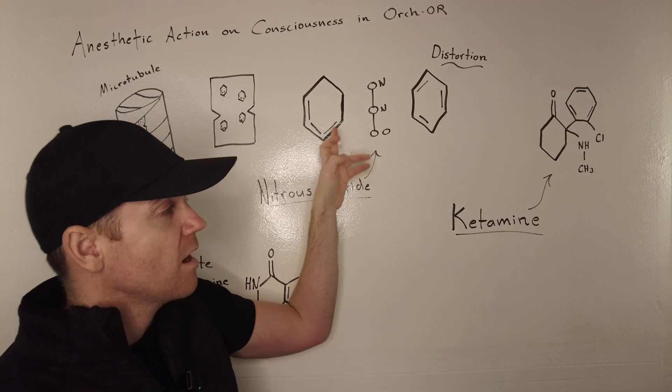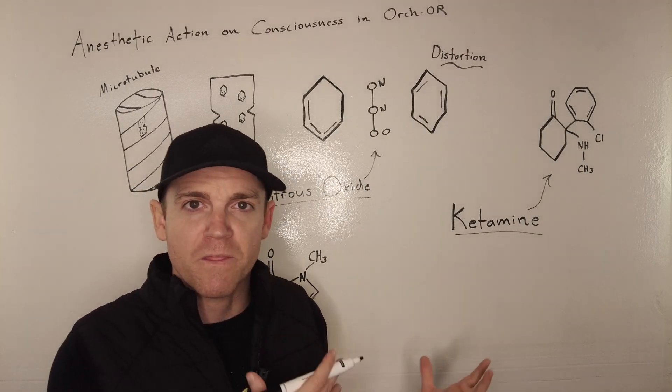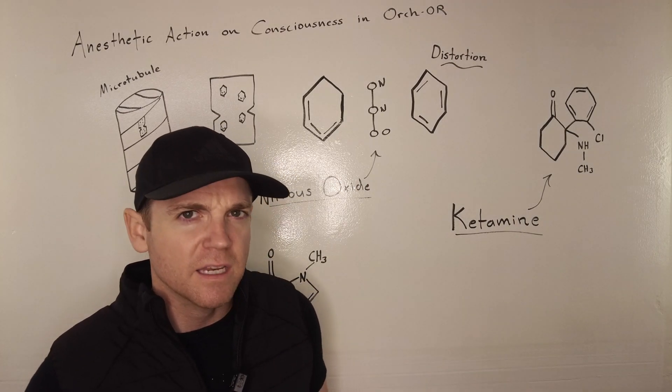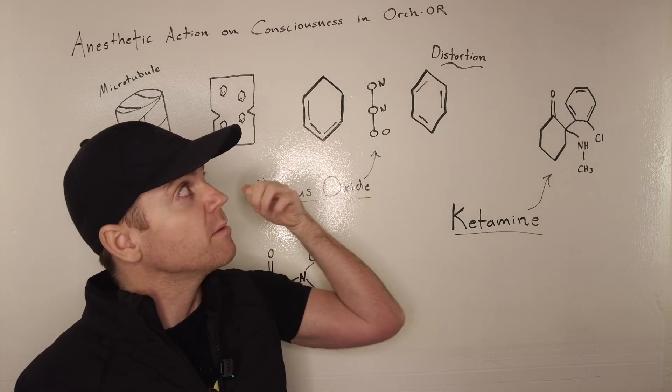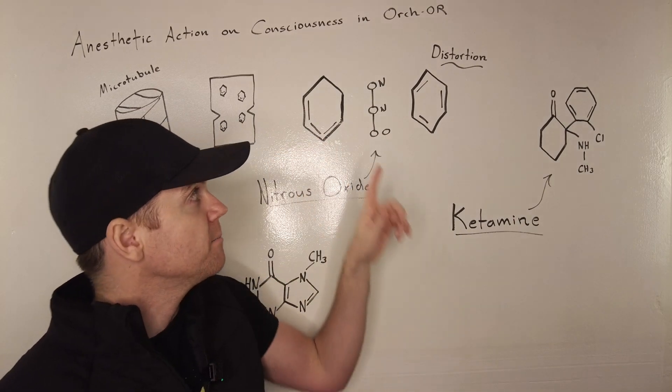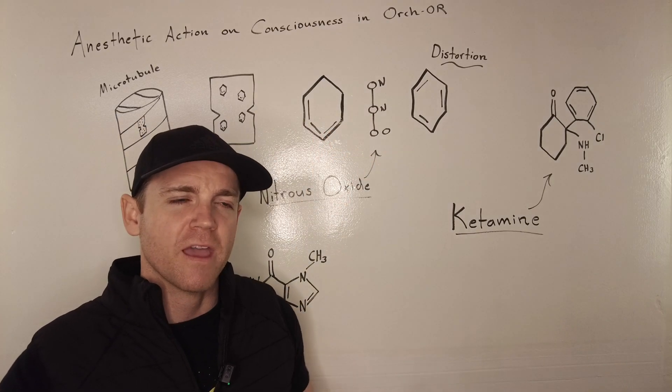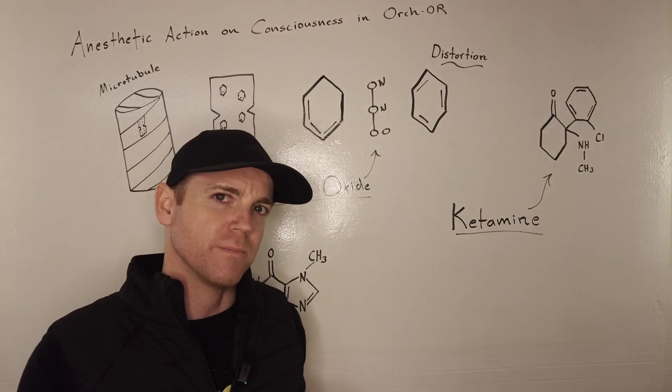So for instance, nitrous oxide can jut up against the benzene ring, and typically a coherent benzene ring, an aromatic ring within phenylalanine or tryptophan within the amino acid sequence of a microtubule, of a tubulin dimer, is usually represented with some kind of a polarity with a one or the other direction, right?